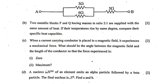Question 4b: Two metallic blocks P and Q have masses in ratio 2:1 and are supplied the same heat. If their temperatures rise by the same degree, compare their specific heat capacities. Using C = Q/(m·ΔT), you get CP : CQ = 1 : 2, meaning the specific heat capacity of Q is double that of P.